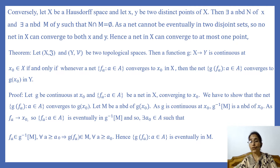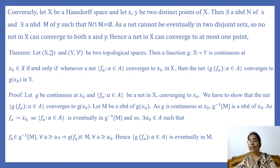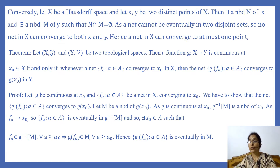Conversely, let X be a Hausdorff space, and let X and Y be two distinct points of X. Then there exists a neighborhood N of X and a neighborhood M of Y such that N and M are disjoint, because the space is Hausdorff. As a net cannot be eventually in two disjoint sets — if a net is eventually in N, then it cannot be eventually in M — no net in X can converge to both X and Y. Hence a net in X can converge to at most one point.